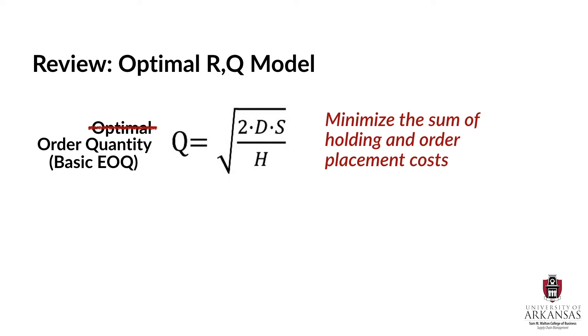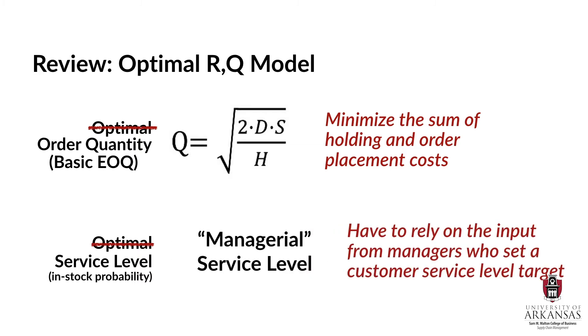Now, let's take a look at the in-stock rate. Without the backorder cost P, the denominator of the ratio in the formula is undefined. Of course, that means that we simply have no way of calculating an optimal in-stock probability. Instead, we have to rely on the input from managers who set a customer service level target. And this is why we call this the managerial RQ policy. It relies on a managerially defined service level target.